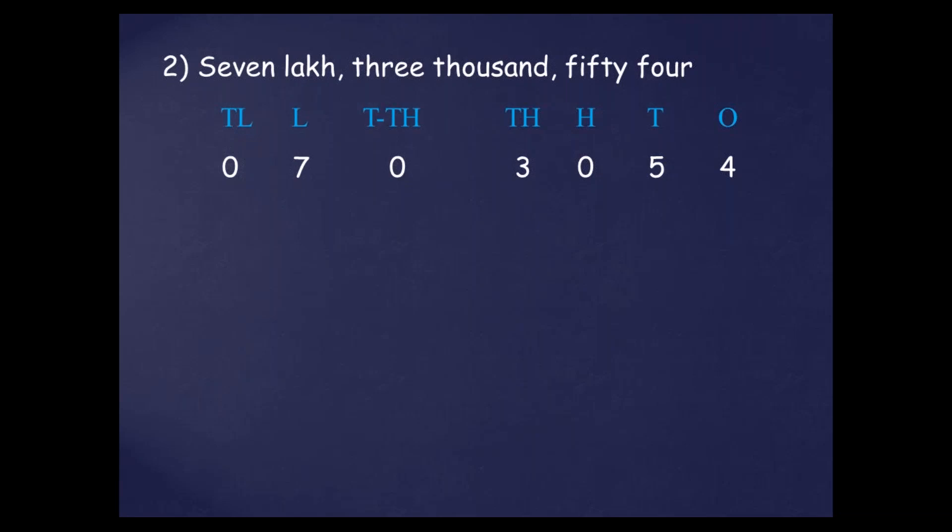So it means I have to write 7 at the lakh place and 0 at 10 lakh. Then the 1,000 period has two places: 10,000 and 1,000. If I write 3 at the 10,000 place, then 0 will come at the 1,000 place, making it 30 — that is wrong. So 3 should be written at the 1,000 place and 0 at the 10,000 place. Now 54 is coming in the ones period. There are three places: 100, 10s and 1s. So 5 at the 10s place and 4 at the 1s place. So the number will be 7,03,054.